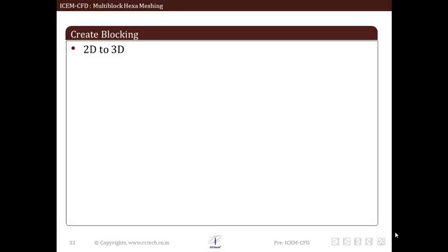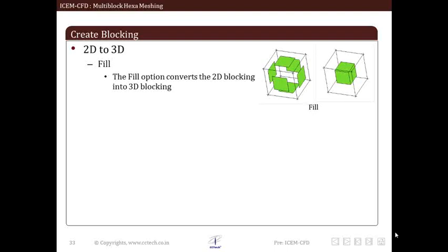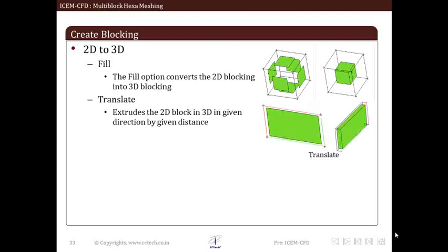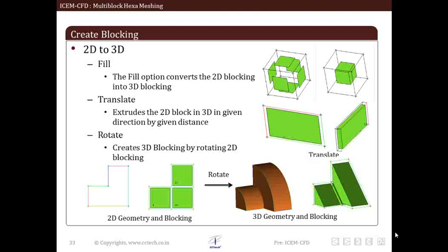Another method of blocking is creating 3D block from 2D block. The 2D to 3D option allows us to convert 2D or surface blocking to 3D blocks. Different ways we can do this is by first fill. The fill option converts surface blocking into 3D block. This requires a close volume of structured and or unstructured surface blocks. It can produce a structured blocking if all surface blocks are structured, four sided blocks, otherwise unstructured or swept blocks may result. Next is translate, it extrudes a 2D block into 3D in the given direction by given distance. The last option is rotate, which creates 3D block by rotational extrusion of a 2D block as shown.